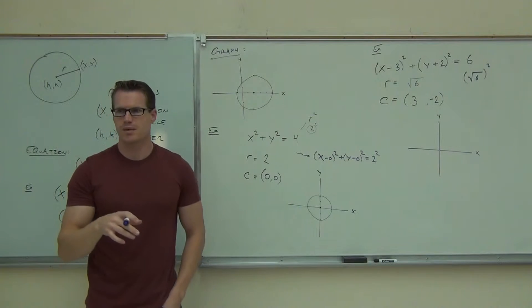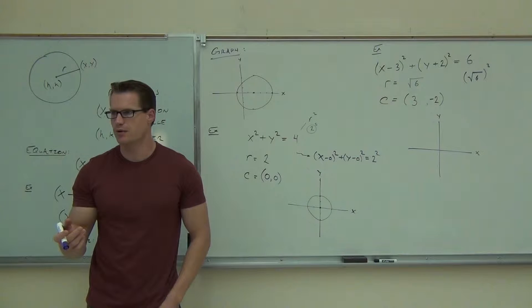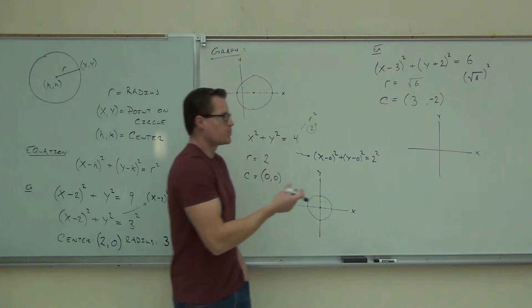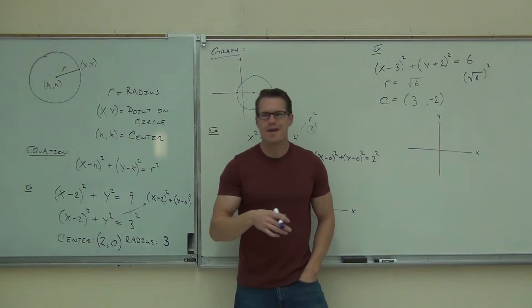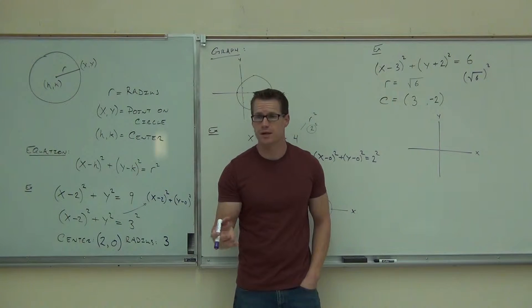Our radius is the square root of 6, we find that's about 2.4, just under 2 and a half. So we'll go ahead and plot this. You make your center first and then approximate your radius. Now you're not going to be exact because you can't be exact with the square root of 6, but you can approximate it.